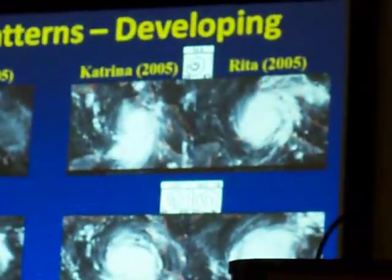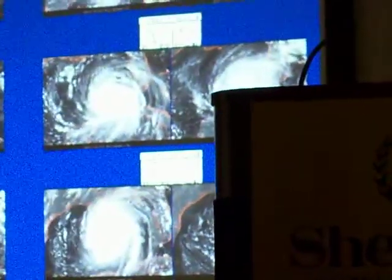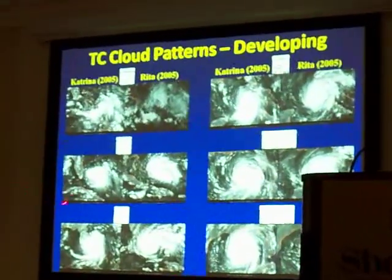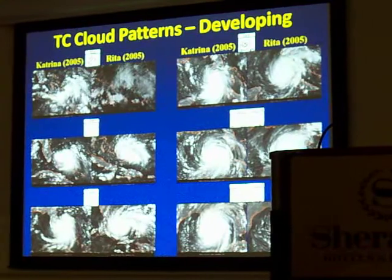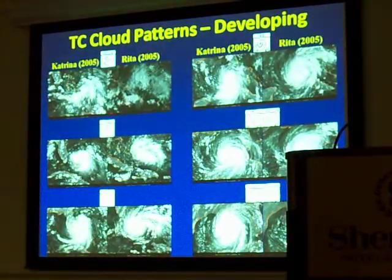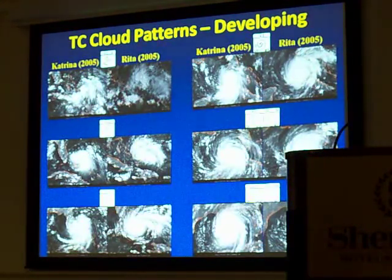At that early point we might call this a T1.5, and about a day later the systems are following the standard rate of development of about a T number per day. We see two systems which are now minimal storms — the banding features have increased and the centers are more centralized within the deep convection. Approaching hurricane intensity there's been further development, and Rita actually begins to develop much more quickly than the standard rate, while Katrina remains much closer to it.